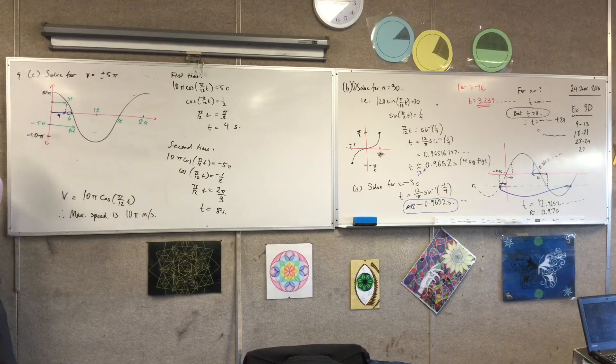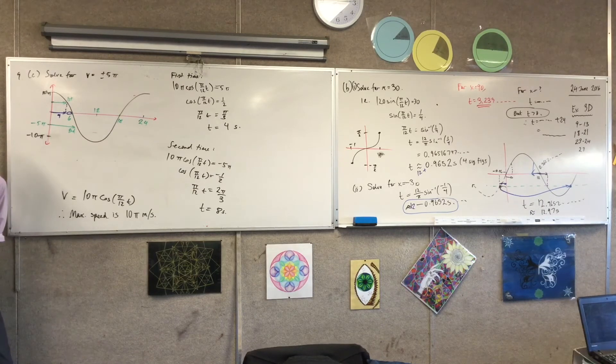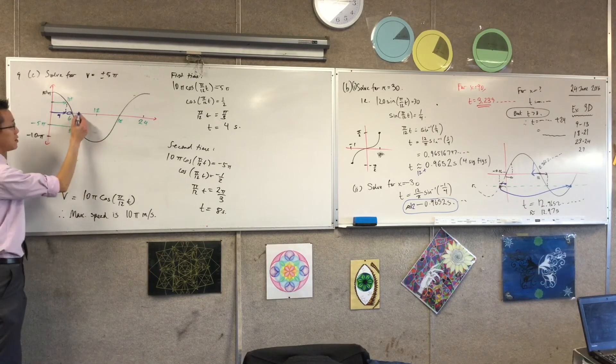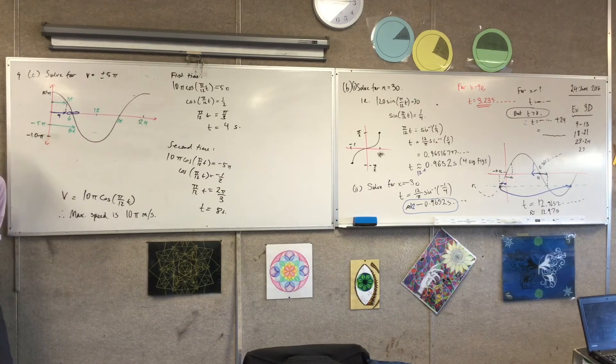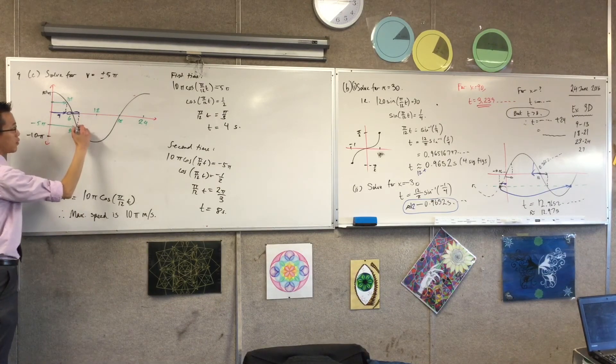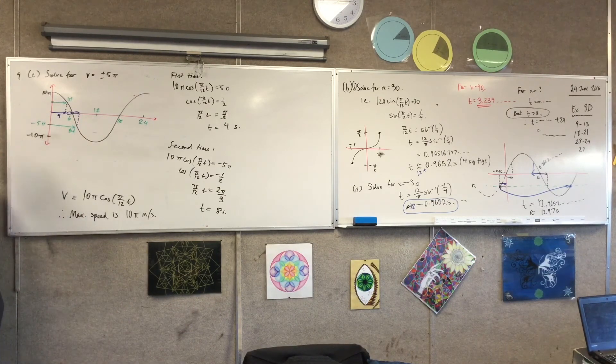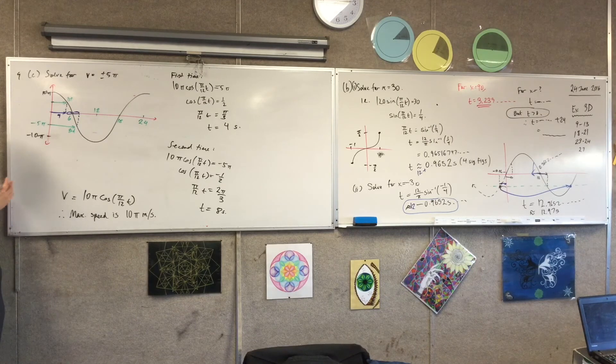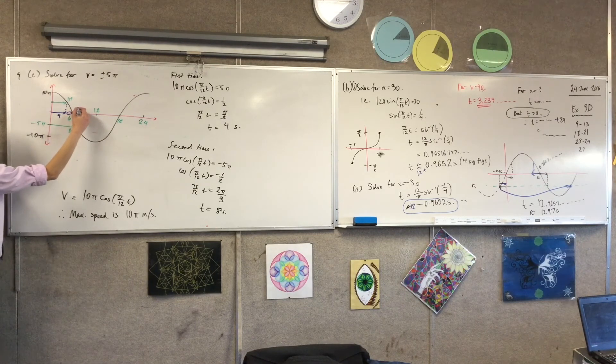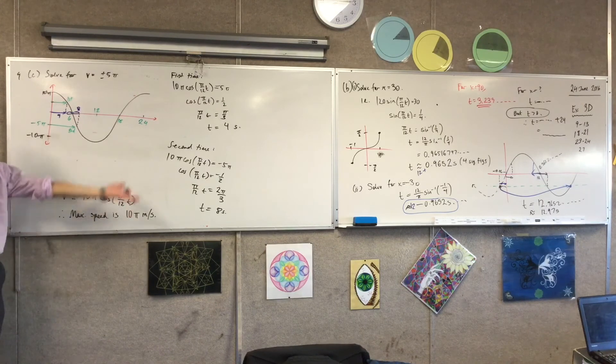That's two seconds. But because of the symmetry of the cosine function, that two seconds is the same as that two seconds, isn't it? So when you go down to here, that's when you should hit negative five π meters per second for the first time. So six plus two, that'll give you eight at that point, which confirms what you've got.